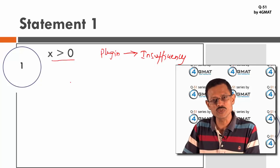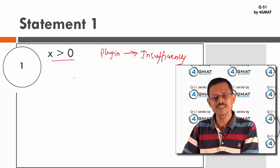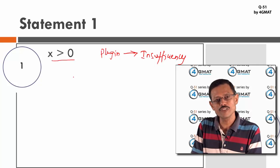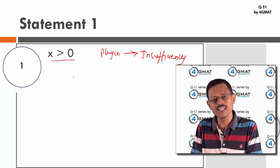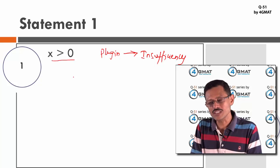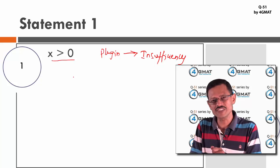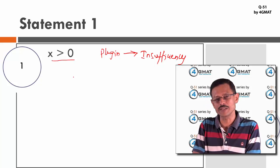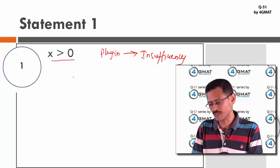Conversely, if you substitute a few values satisfying x > 0 and always get the same answer, you still cannot conclude the data is sufficient — there may be a fourth value giving the opposite result. Sufficiency cannot be proved by plugging in numbers; insufficiency can. If it appears sufficient, look for a number-properties or algebraic explanation.